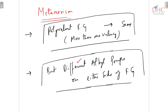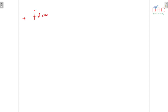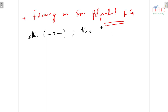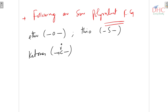Now let's talk about the polyvalent functional groups. Number one is ether — the –O– functional group — which has two unsatisfied valences. If the alkyl groups on either side of this functional group differ in two isomers, they are metamers. Number two is thiol — the –S– functionality. Number three is ketones — C=O — which also has two unsatisfied valencies, making it a polyvalent functional group.